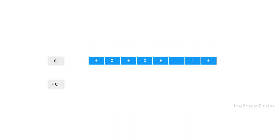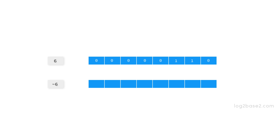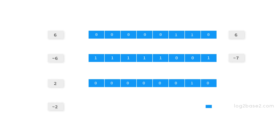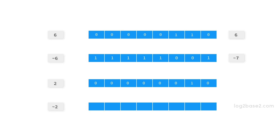Now let us see another example. For six, the eight-bit binary representation is 0 0 0 0 0 1 1 0. Its complement — just toggle the bits — gives us 1 1 1 1 1 0 0 1, which is equivalent to the eight-bit binary representation of minus seven. Now take two: the corresponding binary is 0 0 0 0 0 0 1 0, and the complement gives 1 1 1 1 1 1 0 1, which is equivalent to minus three.